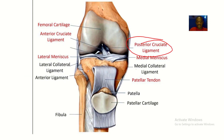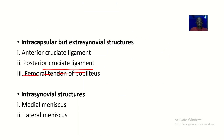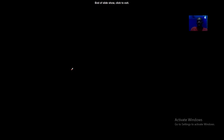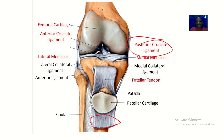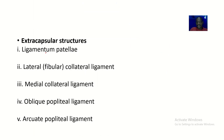Next we have the femoral tendon of popliteus, which attaches from the femoral bone onto the patellar bone. Then we have the intra-synovial structures — those located within the synovial capsule. These are simply the medial meniscus and the lateral meniscus.